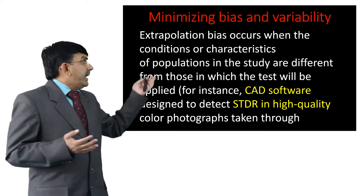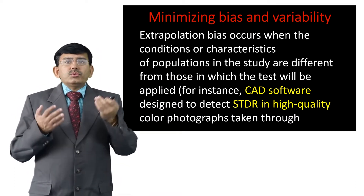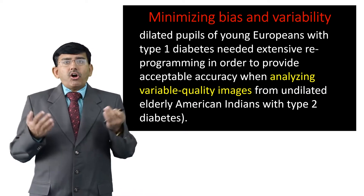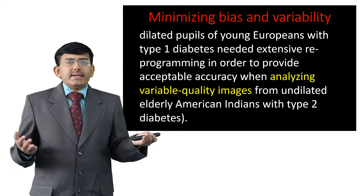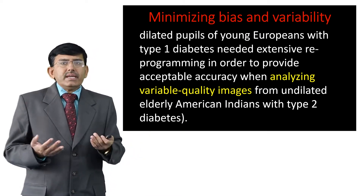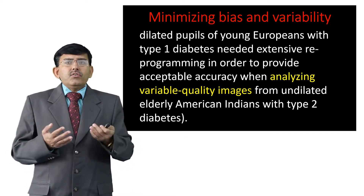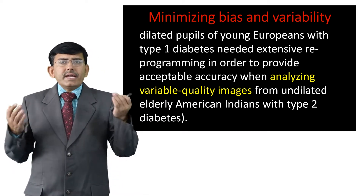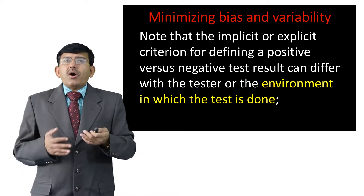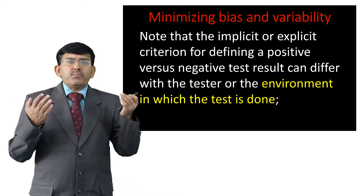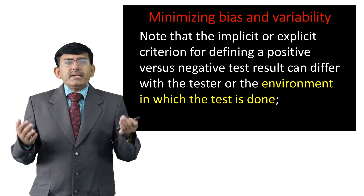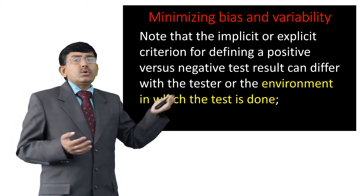For instance, computer-aided diagnosis software designed to detect STDR in high-quality colour photographs taken through dilated pupils of young Europeans with type 1 diabetes needed extensive reprogramming in order to provide acceptable accuracy when analysing variable-quality images from undilated elderly American Indians with type 2 diabetes subjects. The implicit or explicit criteria for defining a positive versus negative test result can differ with the tester or the environment in which the test is performed.